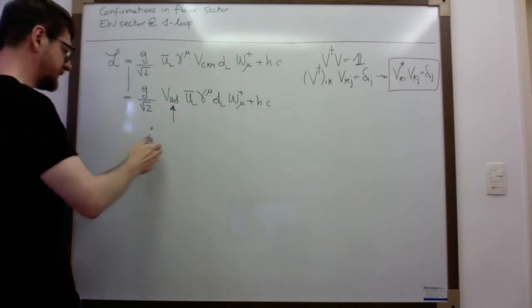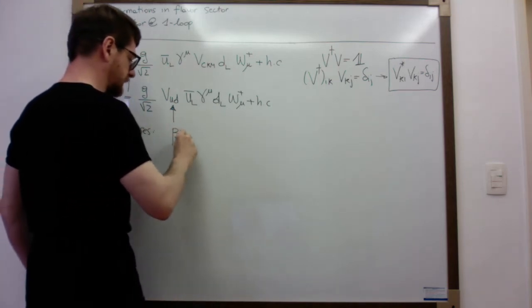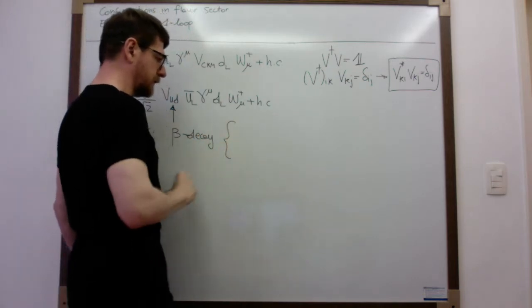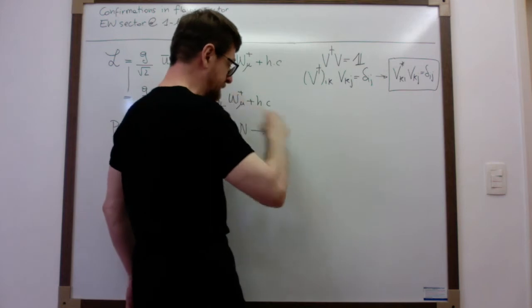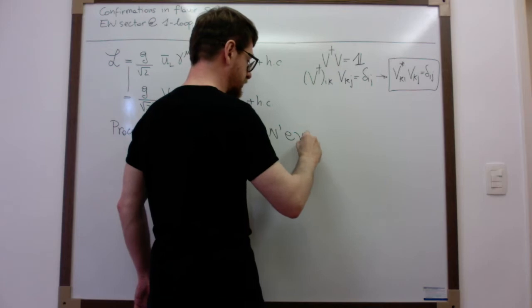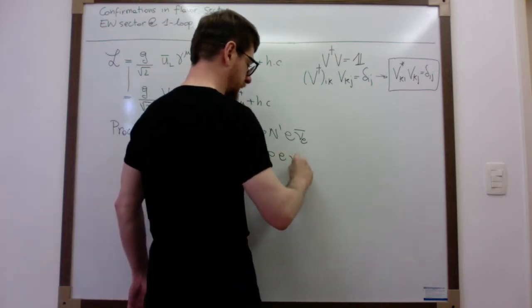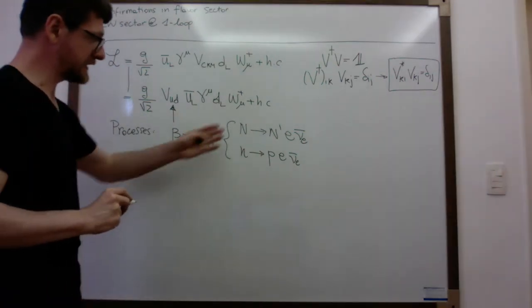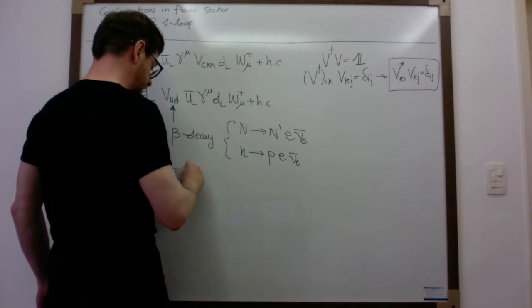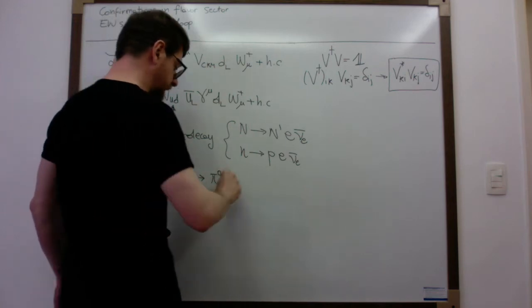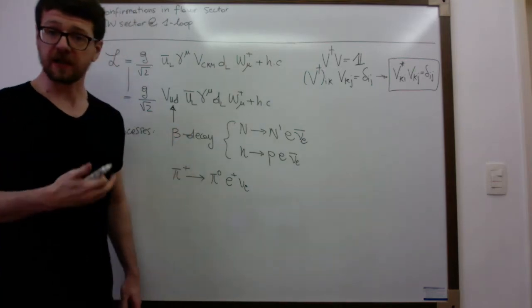So what are the processes in which we can measure these matrix elements? As we said, something related to beta decay. Beta decay can be measured both looking at the beta decay of nuclei — something like N going to N-prime, e, nu_e-bar — or looking at a free neutron decaying into a proton, an electron, and an electron antineutrino. We can also have pion decays: for instance, the decay of pi-plus going into pi-zero, e-plus, and nu_e.